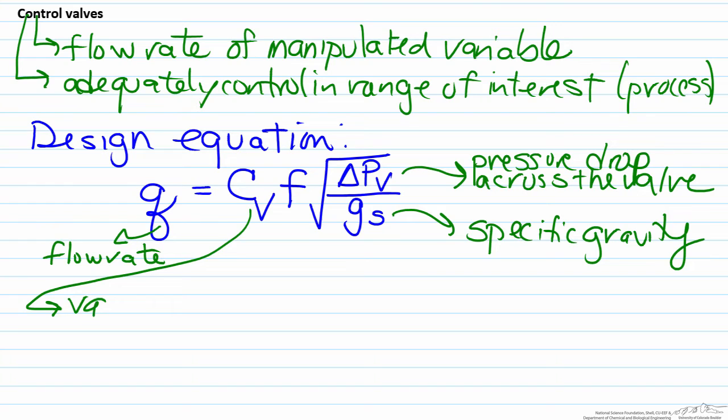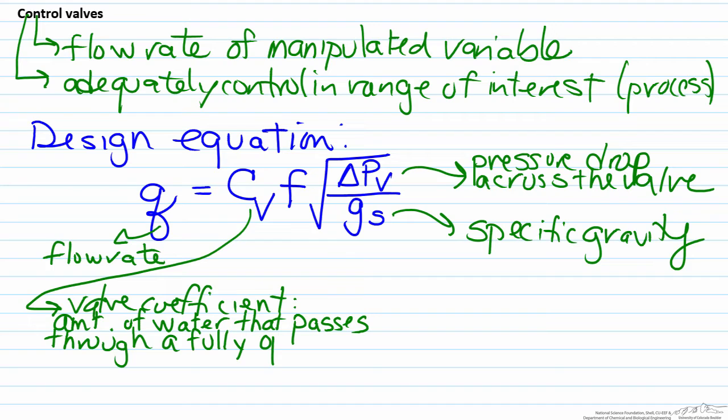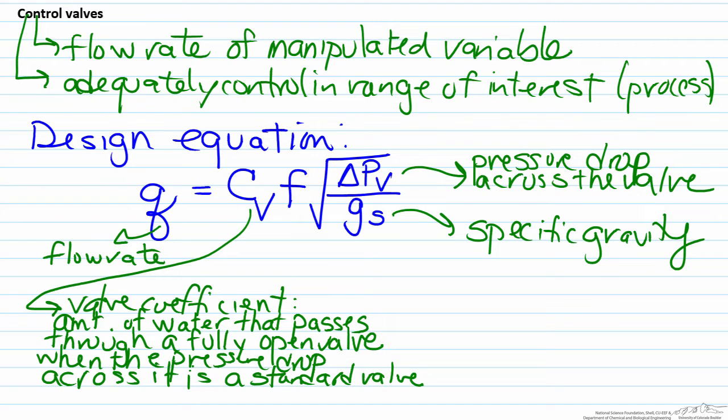CV represents the valve coefficient, and the valve coefficient is an explicit definition. It represents the amount of water that passes through a fully open valve when the pressure drop across it is a standard value. Depending on your units this can be different, but typically one example of a standard value would be one psi.